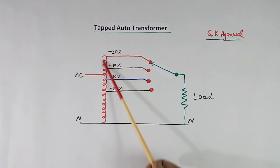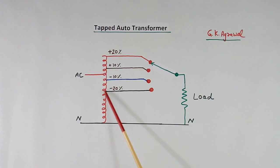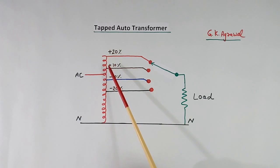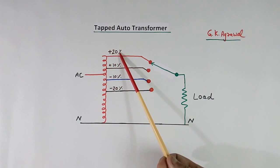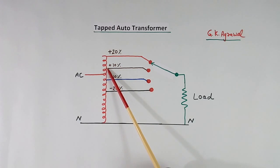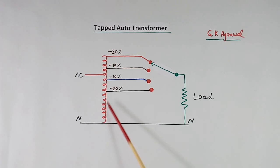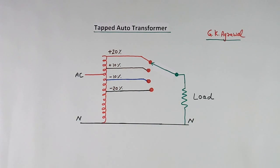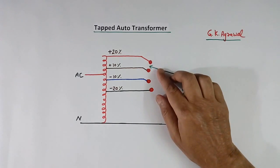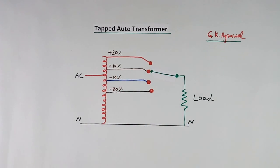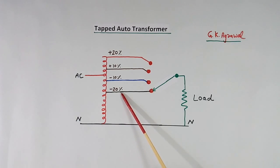This is a tapped auto transformer. In this auto transformer, 5 tapping connections are shown — tappings 1, 2, 3, 4, and 5. AC input is connected at one tapping. Output can be taken from any other tapping. If you connect the output load at the higher turns tap, you will get more voltage — say plus 20%. At the next tap, plus 10%, because turns are slightly more than the next. Lower taps give minus 10% and minus 20%. This tap can be selected using a switch. By rotating the switch, you can connect to plus 20%, plus 10%, minus 10%, or minus 20% — selecting any tap you want.